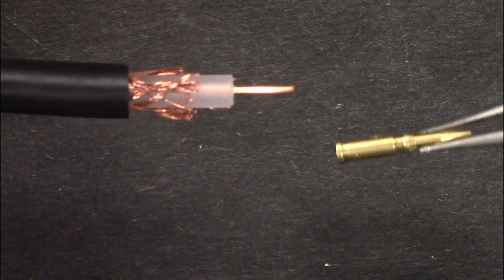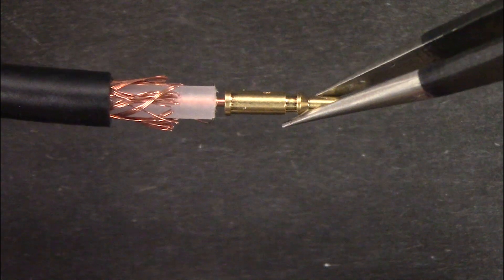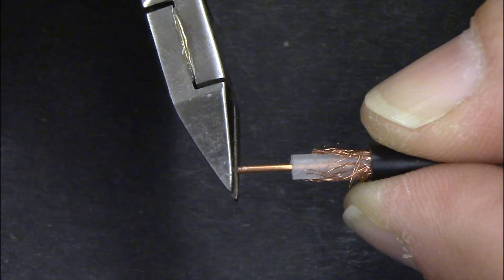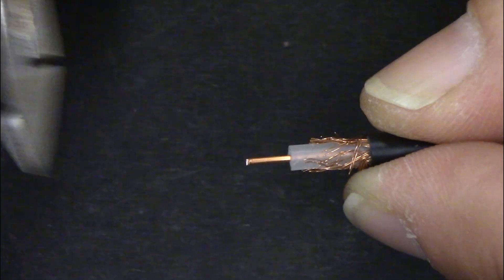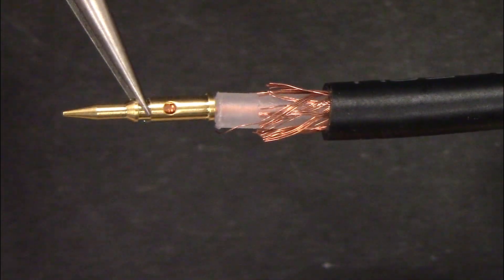Place the male contact onto the center conductor and see how much it needs to be trimmed to set flush against the inner insulator. I need to trim this a little over a millimeter. Now the male contact is setting flush.